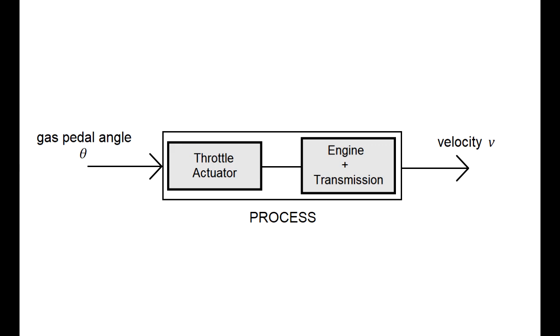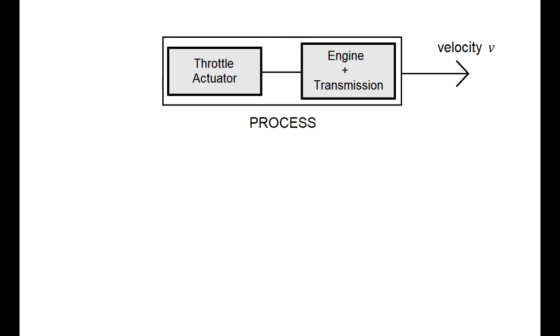This is achieved using a closed loop feedback system, commonly known as cruise control. To integrate cruise control to this process we will need to add a few more elements to the system block. First we start off by sensing the speed using a sensor or in this case a speedometer.